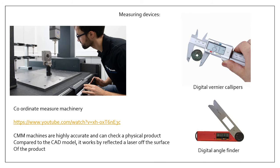There are also specific measuring devices used in quality control. Digital vernier calipers and digital angle finders are precise engineering measurement tools used instead of a steel rule, which has more room for error. Coordinate measuring machinery is highly accurate — it checks a physical product and then compares it to the CAD model on software to confirm it's exactly as it should be. It works using a six-axis robotic arm that shoots a laser; when the laser reflects back, it measures the distance and plots the shape and size of the material.